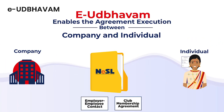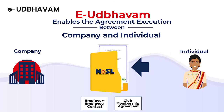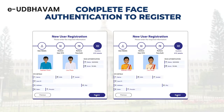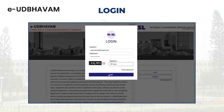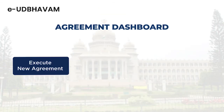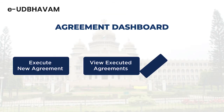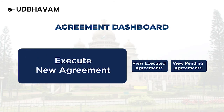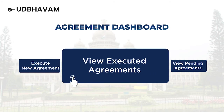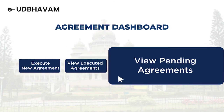To use e-Udbhavam to execute an agreement, register yourself one time only with complete face authentication. Log in to your e-Udbhavam account and select 'Execute New Agreement'.